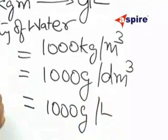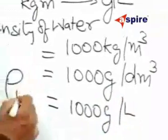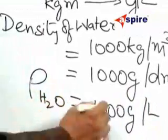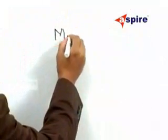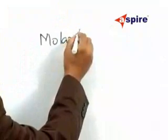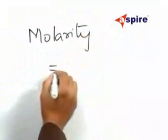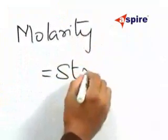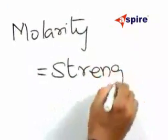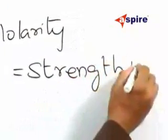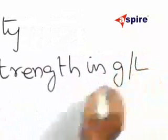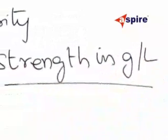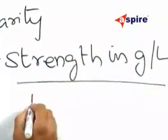Now from this value of density of water, you have to calculate the molarity. Molarity is equal to strength in gram per liter divided by molecular weight of the substance.